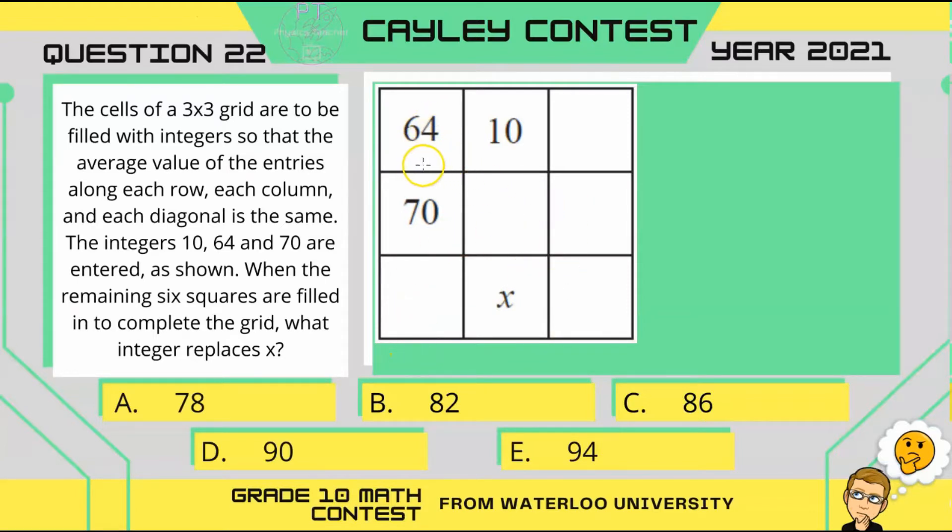Now, since each row, column, and diagonal have three integers, not only would the average be the same, but the sum would also be the same.